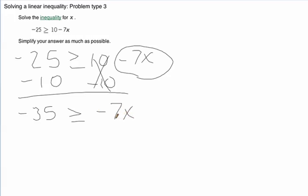Remember, signs always go with the term that follows them on the right. So here we are. Negative 35 greater than or equal to negative 7x. We've got to divide by negative 7.